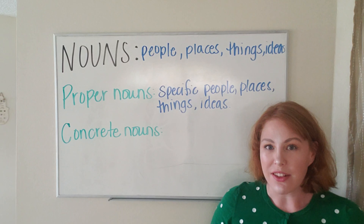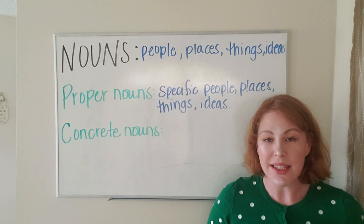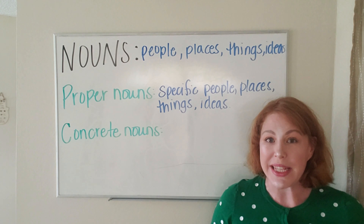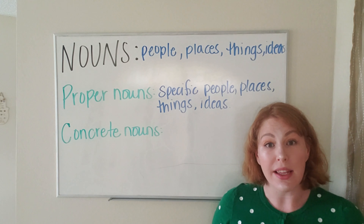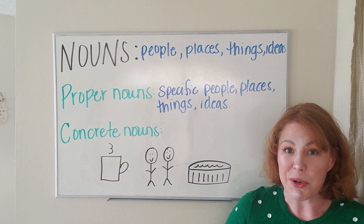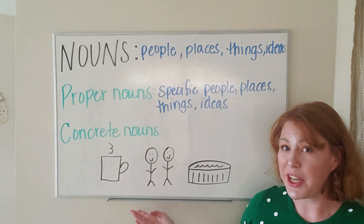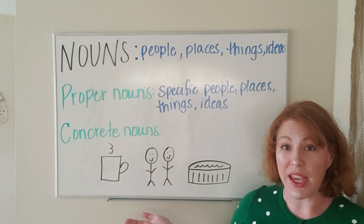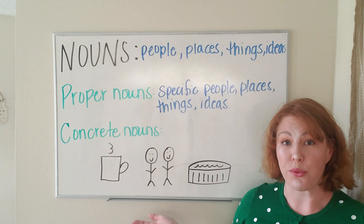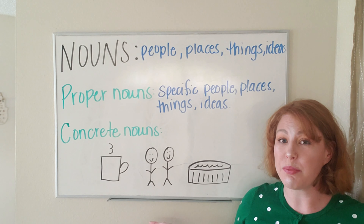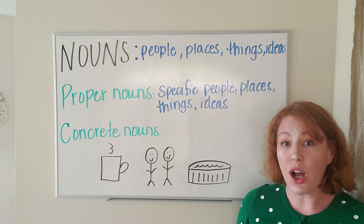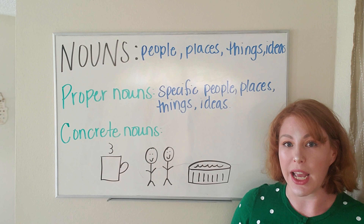The next type of noun you'll see in a basic sentence is a concrete noun. These are people, places, and things that are tangible — that we can see in the physical world. For example, a coffee cup is a tangible thing. Your friends are people that you see in real life. Your pool is a place you can go to in the physical world. All of these are examples of concrete nouns.